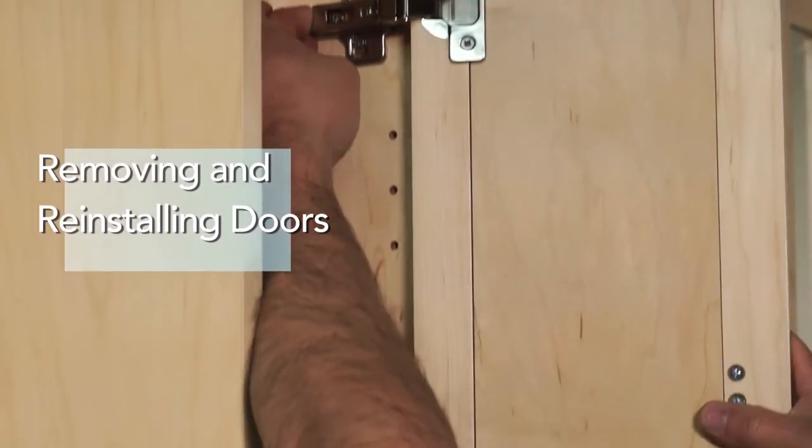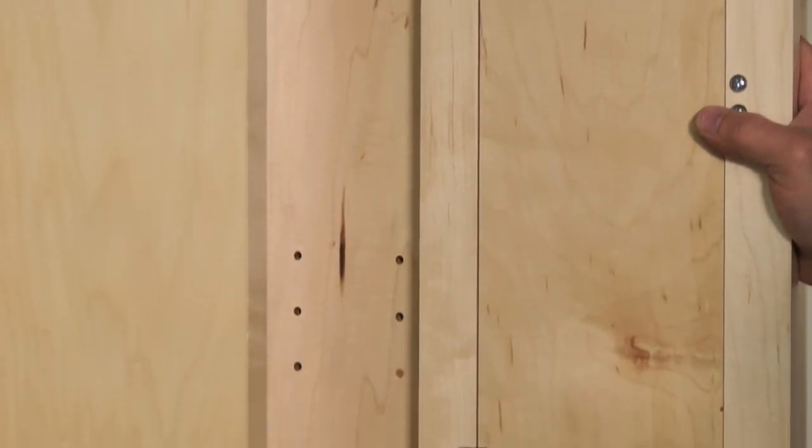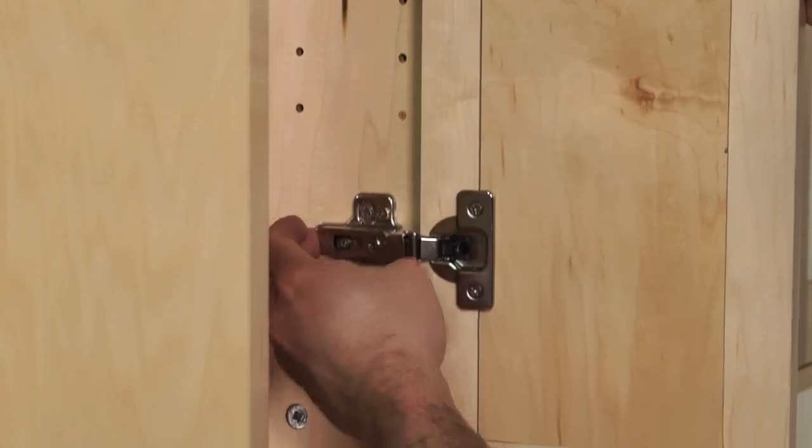Removing and reinstalling doors. To remove the hinge from the mounting plate, press gently in the place as shown.